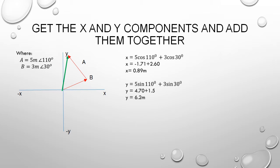For the y component, we would have 5 times sine 110 degrees plus 3 times sine 30 degrees. Our y component of the resultant vector would give us 6.2 meters.